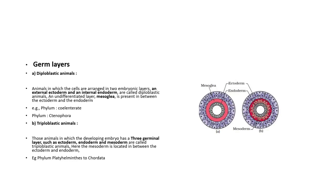The next topic is germinal layers. There are three germinal layers: Ectoderm, Mesoderm, and Endoderm. In the diagram, three colors are used — blue for ectoderm, red for mesoderm, and black for endoderm.